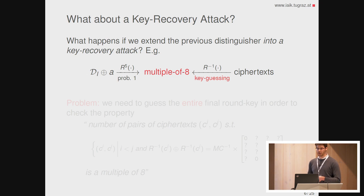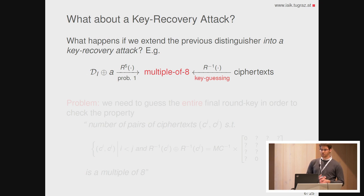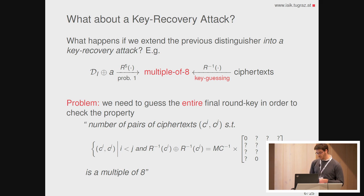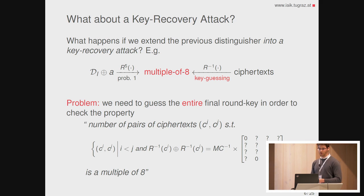What happens if we try to extend this distinguisher into a key recovery attack? For six rounds of AES, we can guess the final key, partially decrypt, and check if the multiple-of-eight property holds — if not, the guessed key is wrong. However, the problem is that to check this property we have to guess the entire key, because this property involves the full state. That is not a problem for AES-192 or AES-256, where this attack is still more competitive than brute force, but it is obviously a problem for AES-128 — that's brute force.